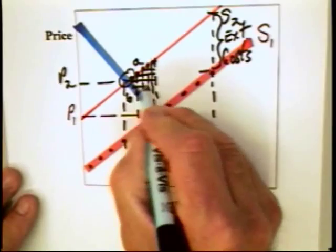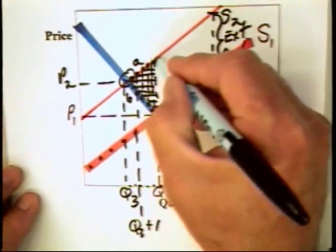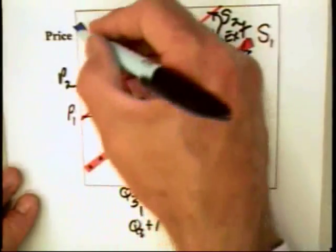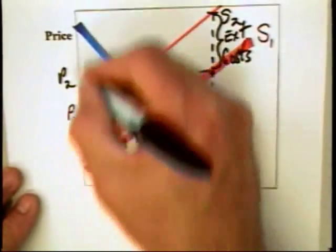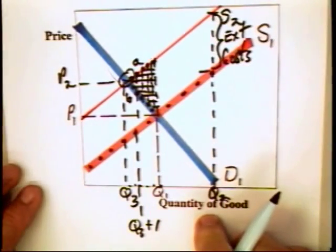In short, there is an inefficiency in the market equal to this area here. Sure, consumers get this value, but you have to subtract out that to get the true value in the market.